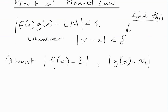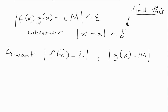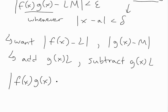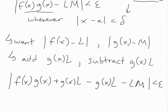We basically want to rewrite this so that we get two terms: the absolute value of f(x) minus L, and the absolute value of g(x) minus M — just like my proof of the sum law. To do that, we add and subtract g(x) times L. So we rewrite as: f(x)·g(x) plus g(x)·L minus g(x)·L minus L·M, with absolute value less than epsilon.